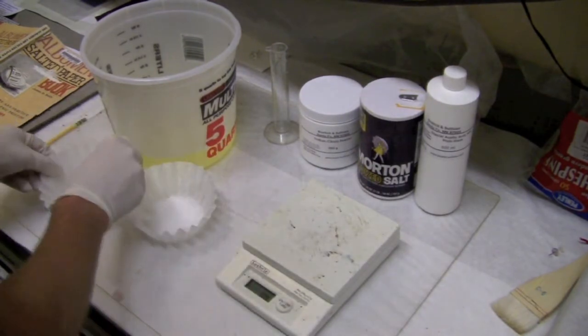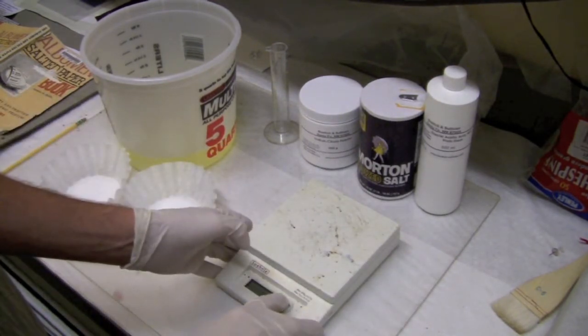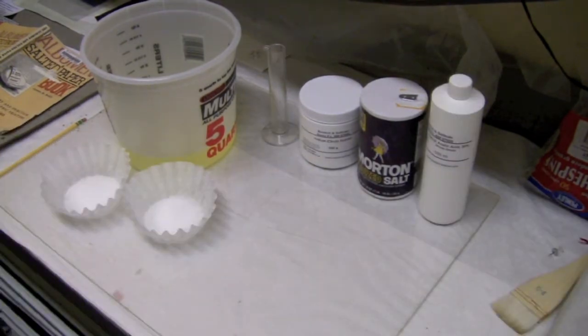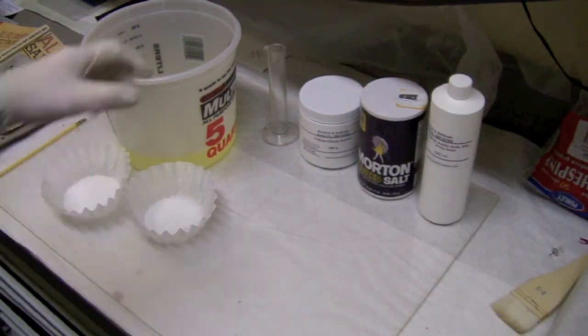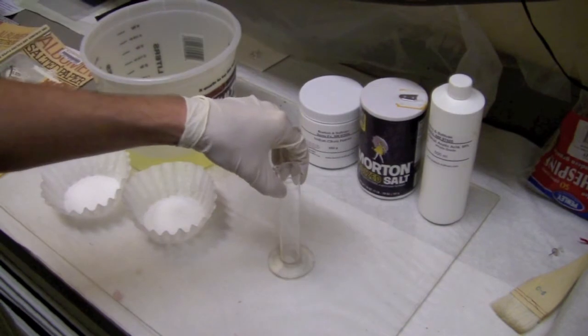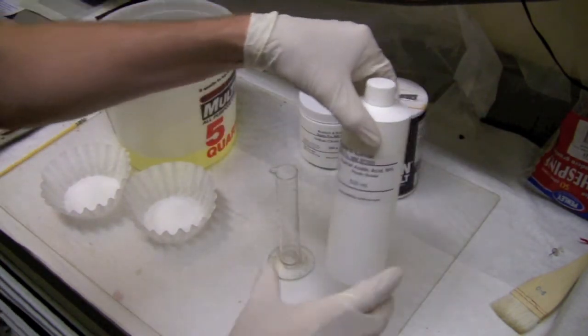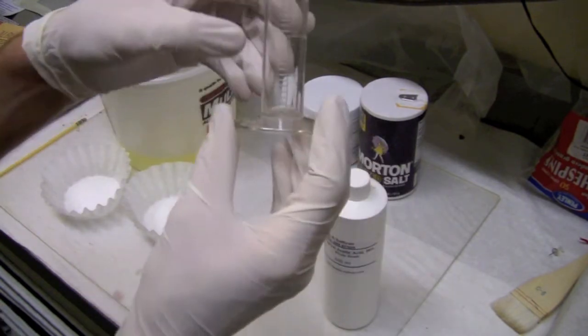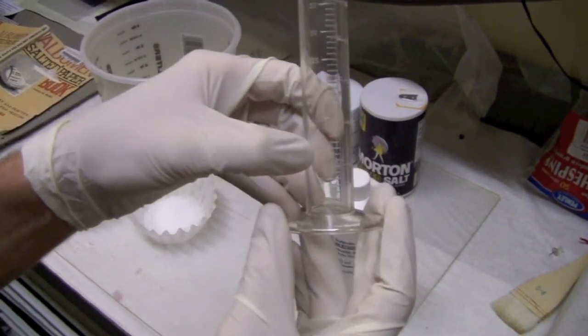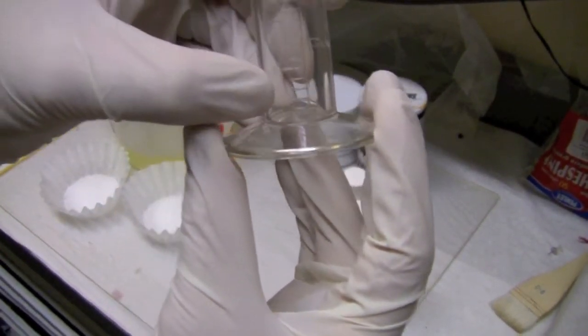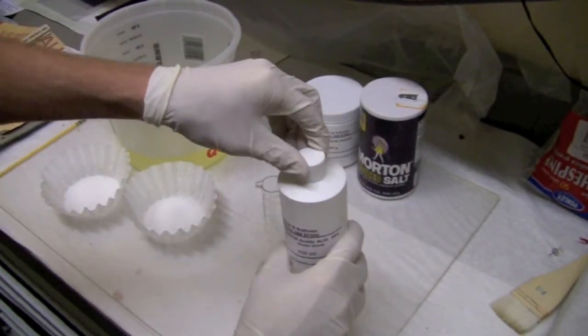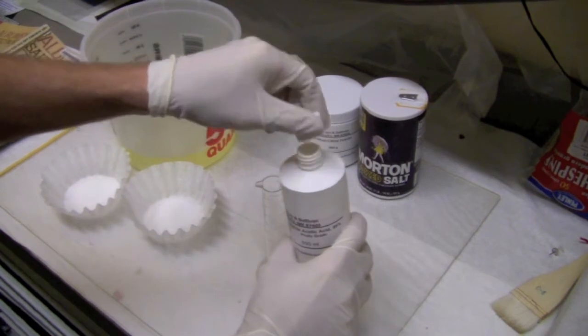We're also going to need some glycolic acid. Now that we're done with our two powders, we're going to move on to our liquid, which is the glycolic acid. We only need 2 milliliters of it, so we're going to use a very small graduated cylinder. We only need these first two marks here. Very carefully, pour that in.